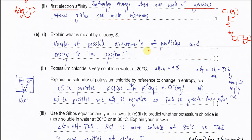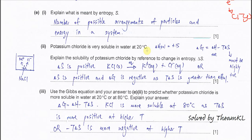Part E: explain what is meant by entropy. Entropy is a measure of the randomness of a system. Alternatively, it is the number of possible arrangements of particles and energy in the system — how many ways the particles can be arranged in a particular system.